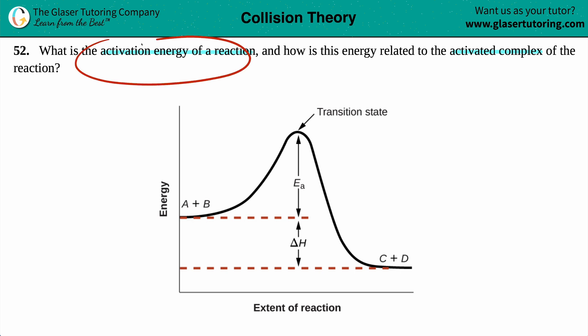What is the activation energy of a reaction? Well, the activation energy, which is also known as Ea, so spot out where the Ea is on this diagram. It is right here. The activation energy, also known as Ea, is the minimum amount of energy.